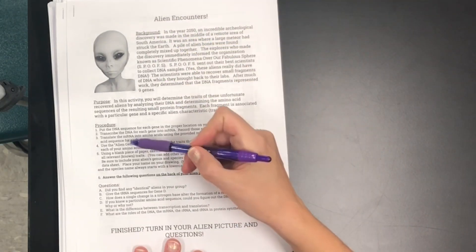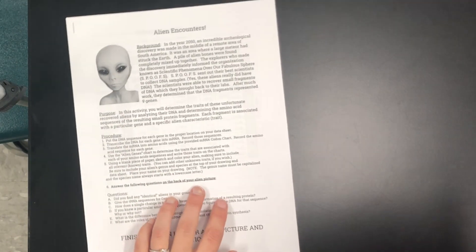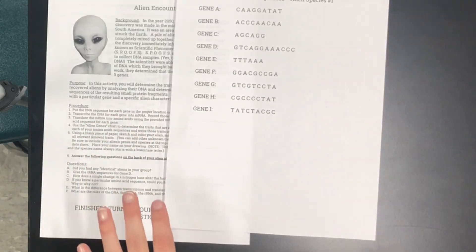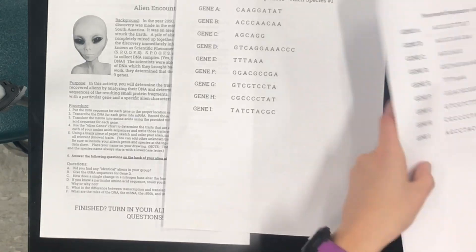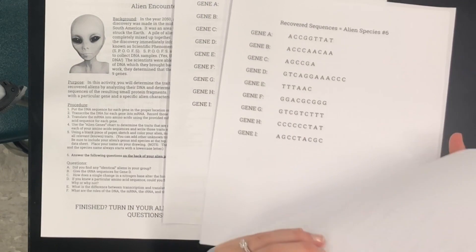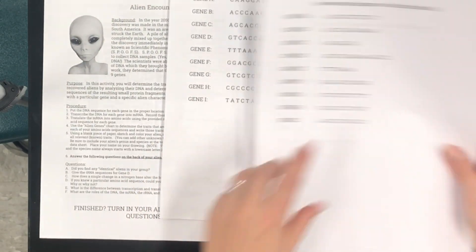So be sure to read the background information. What you're gonna need for this activity is one Alien Encounters sheet, one recovered alien species DNA sequence and you actually have a bunch of different copies up front in the room so just make sure you grab one and people at your table will probably have different numbers. So you might have a six and your partner or person across the table from you could have a two.